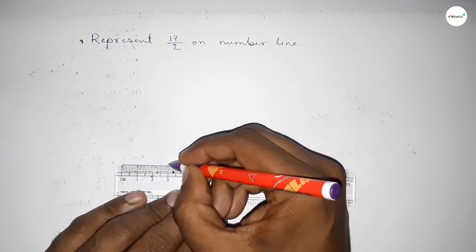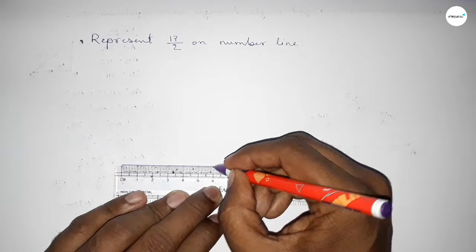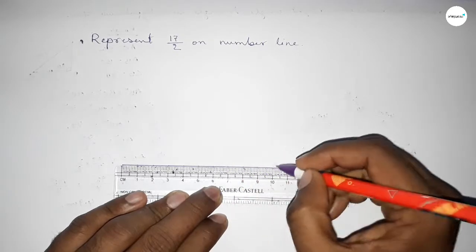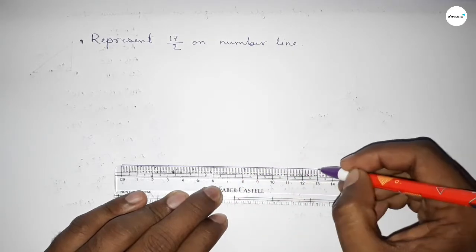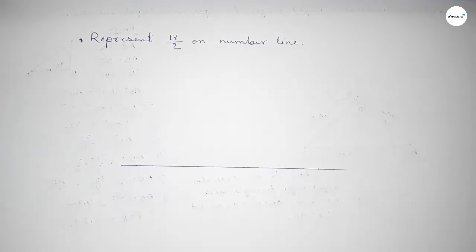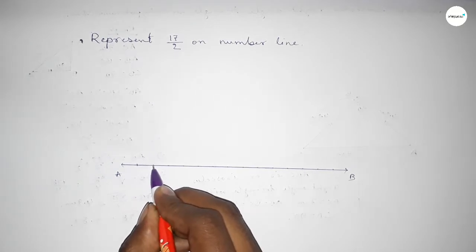Drawing here a line of any length. Then we have to mark the numbers on the line by using a scale, taking the arrow marks on both sides. Now mark the numbers.